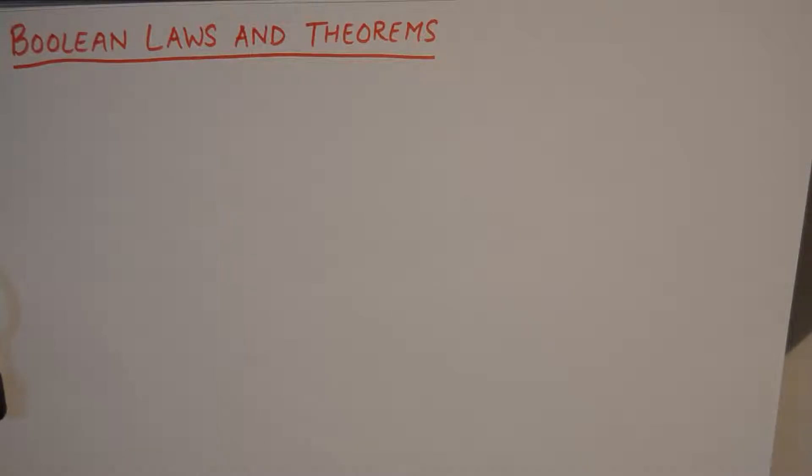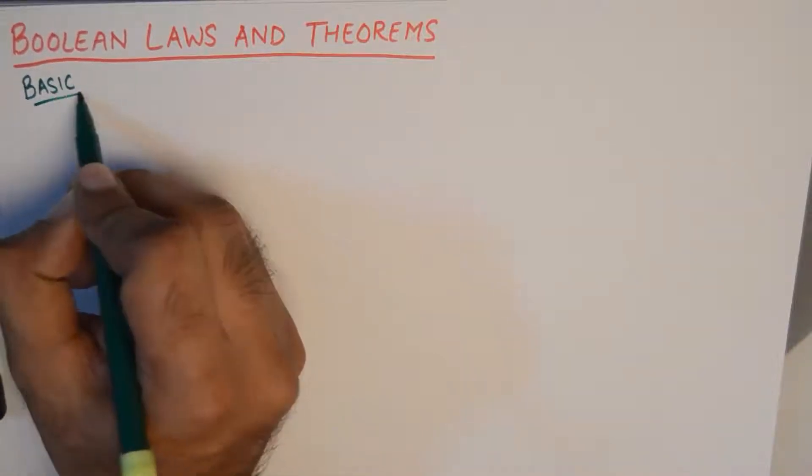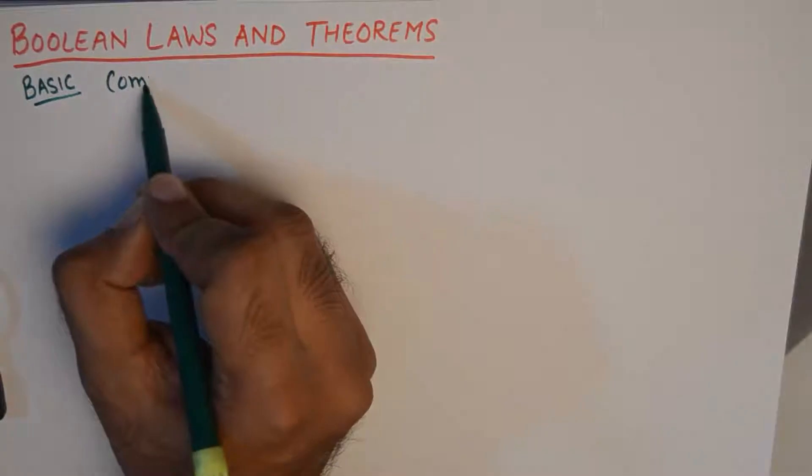These theorems are very important to perform certain simplification tasks during the design of logic circuits. For two input logic circuits you'll find some of the basic laws to be holding true in Boolean algebra. The first law is the very basic law which is commutative law. So I'll write down basic laws. The first one is commutative.